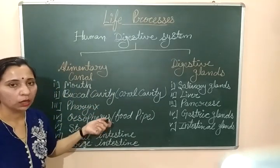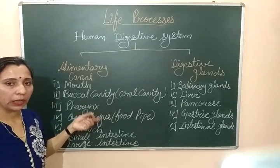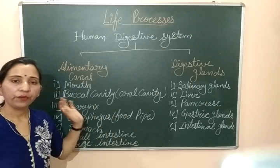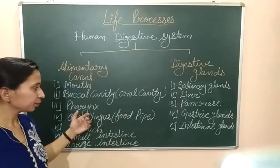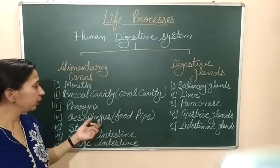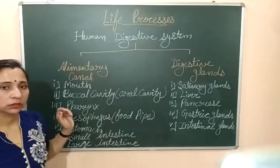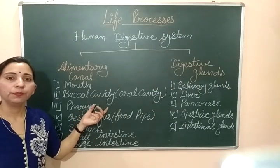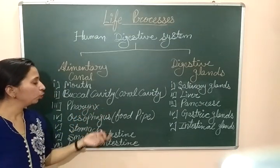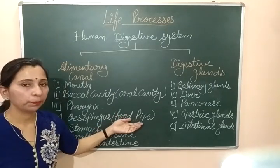After the oral cavity, food is transported through the pharynx. The pharynx is connected to both our food pipe and our wind pipe. Pharynx is the common opening for the food pipe as well as the wind pipe. We will discuss this more in the respiration section as well.